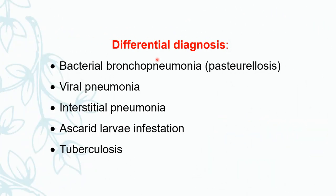Differential diagnosis: there are a large number of diseases that cause lower respiratory tract disease. Many produce pneumonia and are difficult to differentiate based on clinical signs alone. These diseases are differentiated with the help of examination of various excretions, secretions, and laboratory tests. Conditions to differentiate include bacterial bronchopneumonia, pasteurellosis or hemorrhagic septicemia, viral pneumonia, interstitial pneumonia, heavy infestation by migrating ascarid larvae in the lungs, and tuberculosis — all requiring proper laboratory tests.